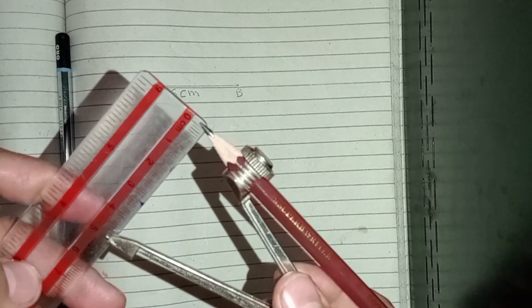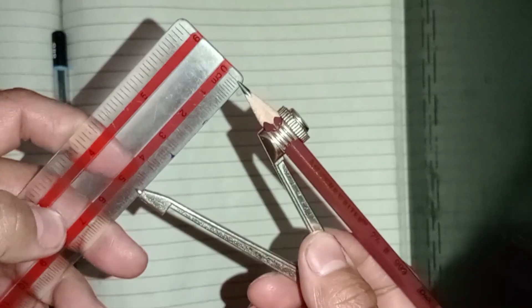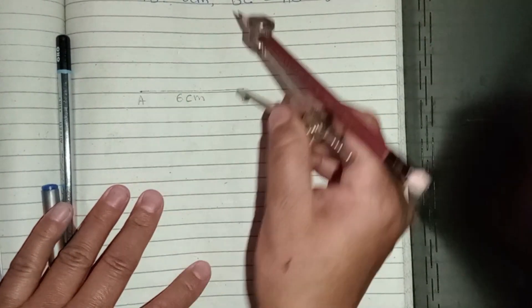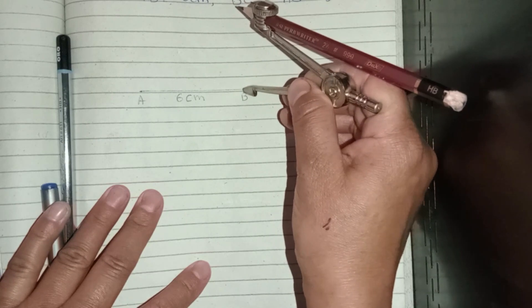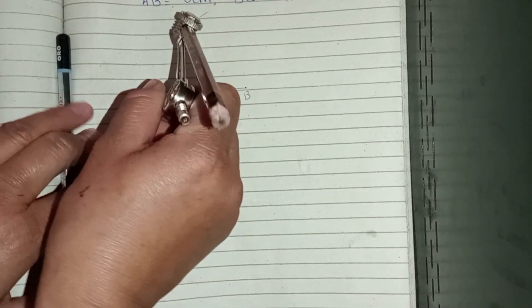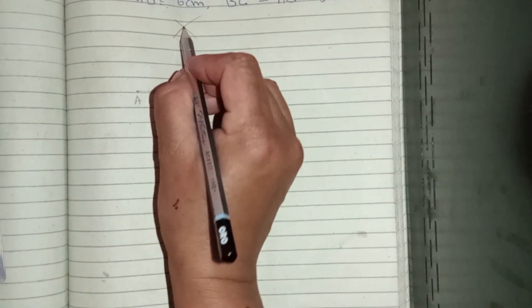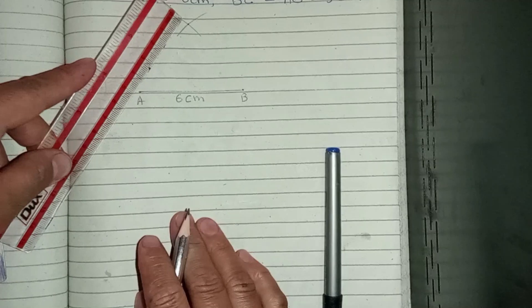BC is 5 cm. From B to C, we have to draw an arc. Let's draw that arc. And here, AC is also 5 cm. Let's draw that arc.